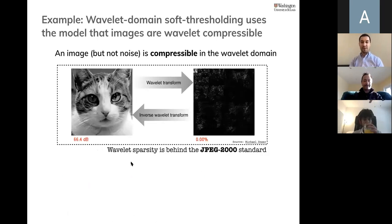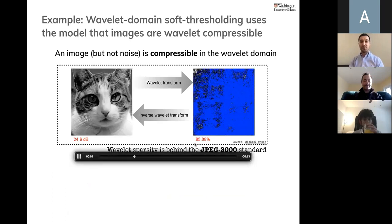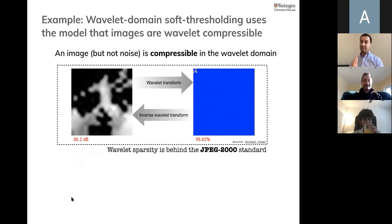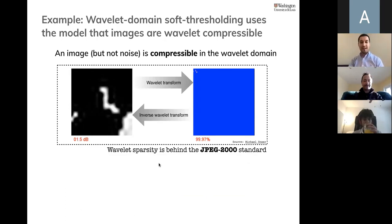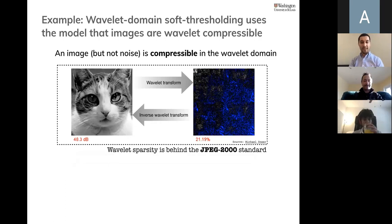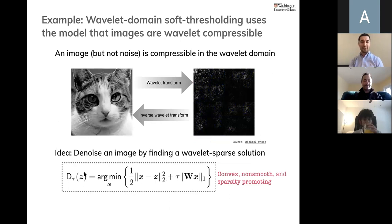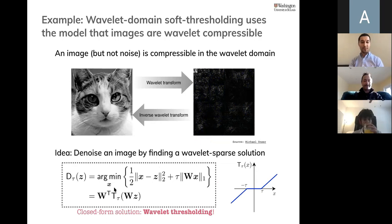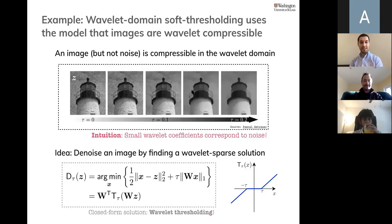Here's a very traditional proximal operator example. You have an image, and after applying a wavelet transform and throwing away wavelet coefficients from small to large, you don't lose quality. This was at the basis of wavelet thresholding and compressive sensing, and behind image compression standards like JPEG 2000. The key message: natural images are very well compressible in the wavelet domain. Using L1 norm of the wavelet transform as h promotes sparsity in wavelet coefficients, giving a closed-form solution known as wavelet thresholding. As tau becomes larger, you start losing important features in the wavelet domain.